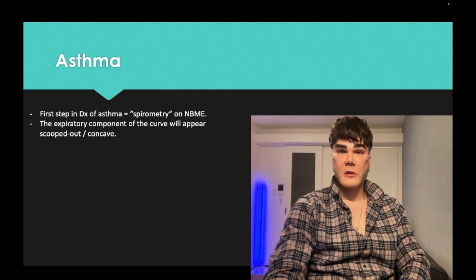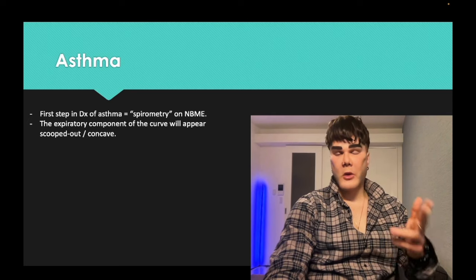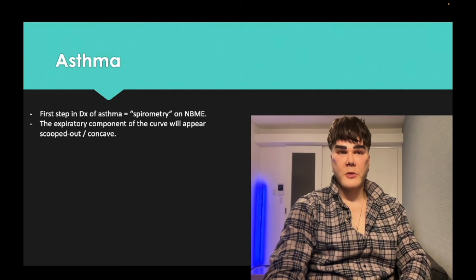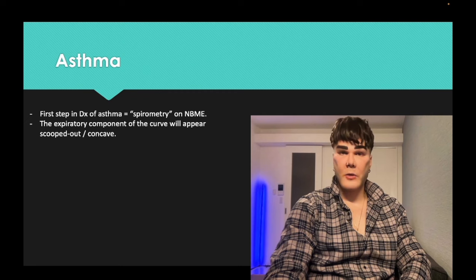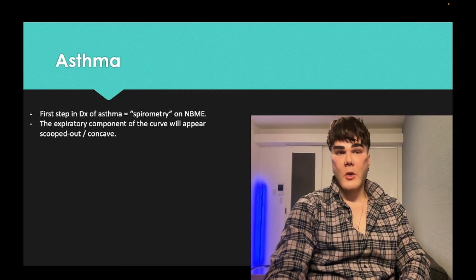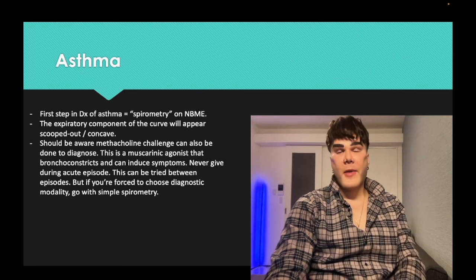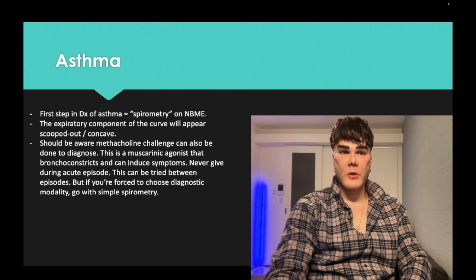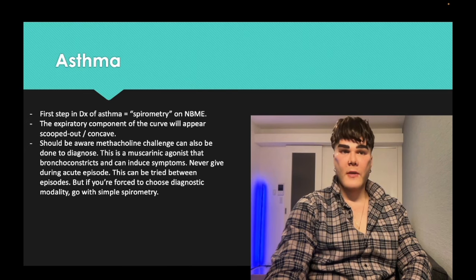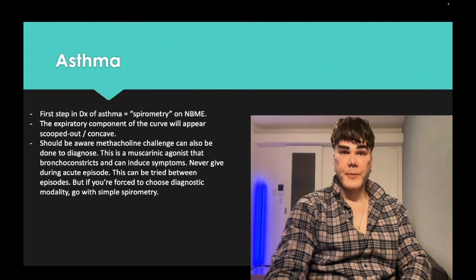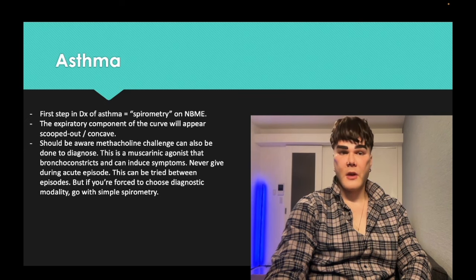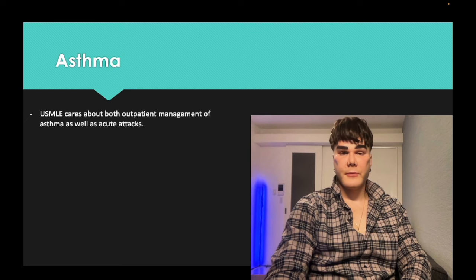Spirometry flow-loop curves are scooped out or concave in obstructive lung disease. Methacholine is a muscarinic receptor agonist that can reproduce asthma symptoms and spirometry findings. Never give it during an acute attack, but you can give it outpatient between attacks if you suspect asthma — if it reproduces symptoms, it's facilitative for diagnosis.